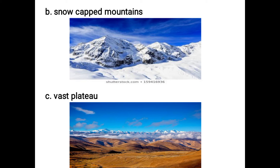The next one is 'a vast plateau.' Plateaus are plains, and these are lands which are just a little above sea level — they are not at a very great height like mountains, just a little above the sea.